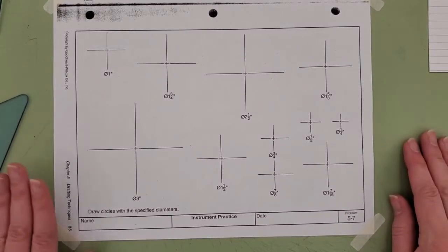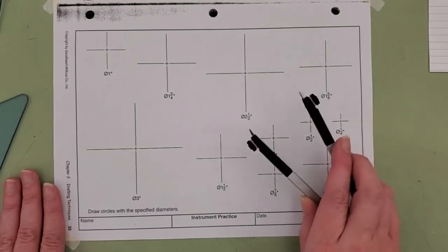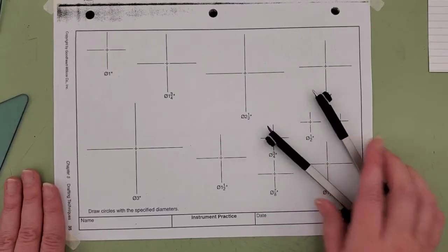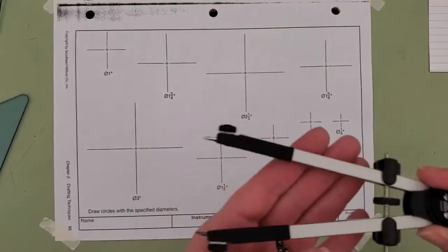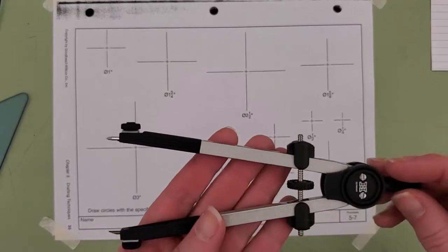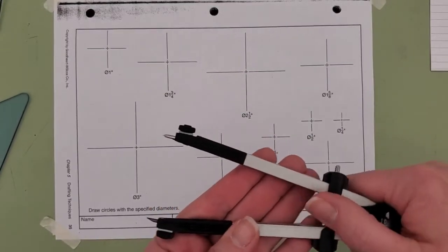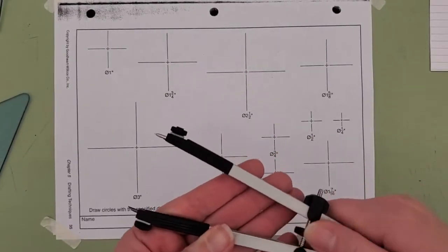In this exercise we're going to practice using our compass. When you have your new compass, you will have a wheel that you will turn in order to open and close the legs.